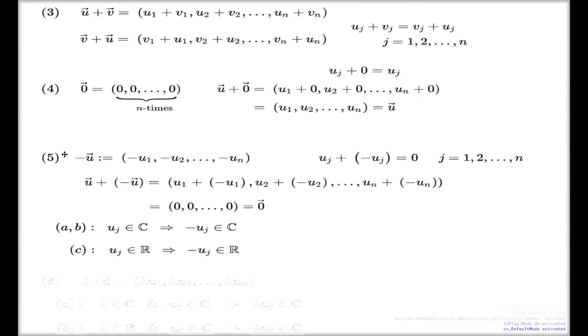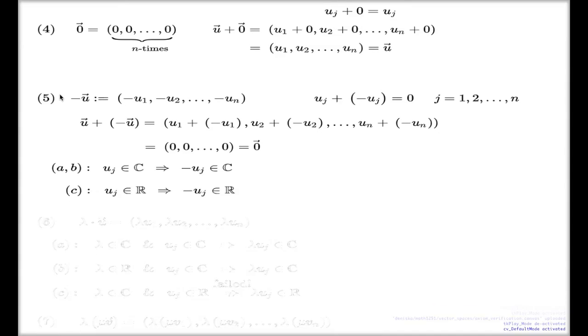So, so far, in these three examples, everything went very identical to each other. For all three examples, the axiom was satisfied, the first, second, third, fourth, and fifth.